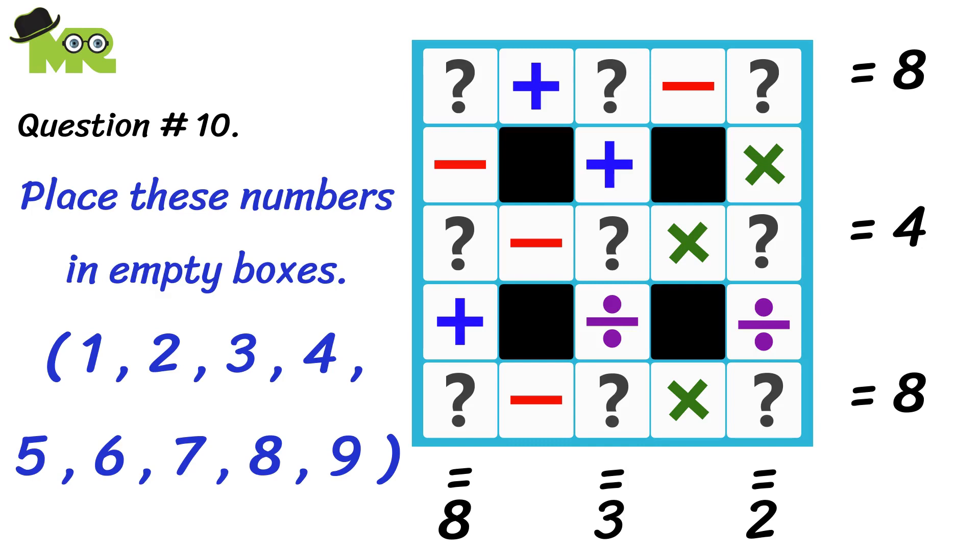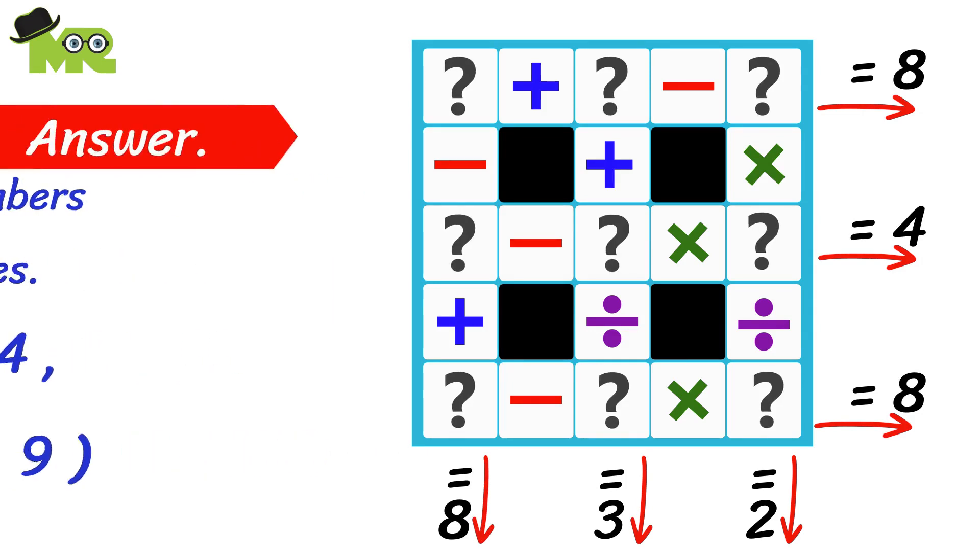Your answer could be equal to 8 in this way or in this way, 8 in this way, same way equal to 2 in this way, 3 in this way, and 8 in this way. It's time to solve this puzzle.